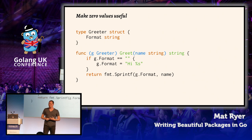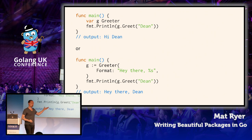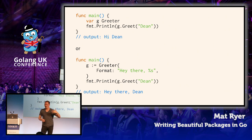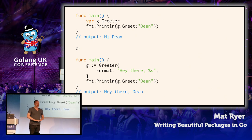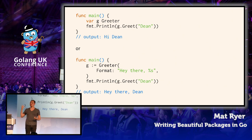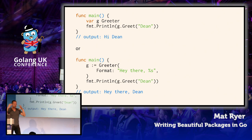Make zero values useful. This applies everywhere but it's quite nice. I have this greeter type and the greet method checks if the format is empty and if it is uses a default format. That means we can use the type just by declaring it and get on and use it — we say hi to Dean by just creating a greeter without having to actually do anything. But then we can also control it. Think about what the behavior of this should be by default. This extends to — if your code is going to connect to something like NSQ, NSQ has default ports and things it will listen to. So just have those as the default, so you can just start NSQ, run the thing, and it works without those extra cognitive steps.